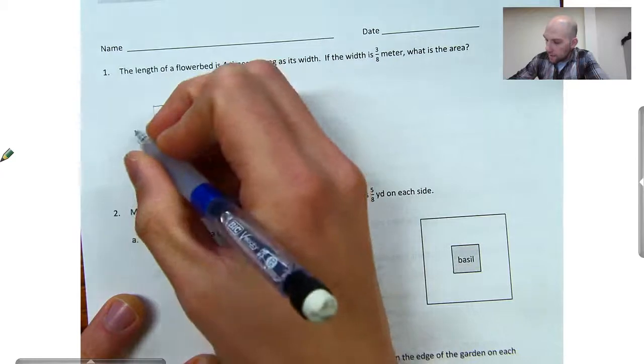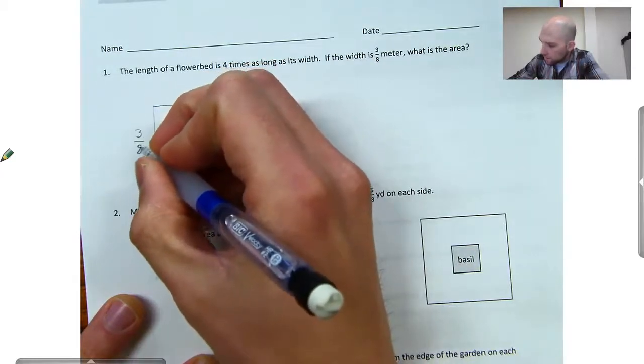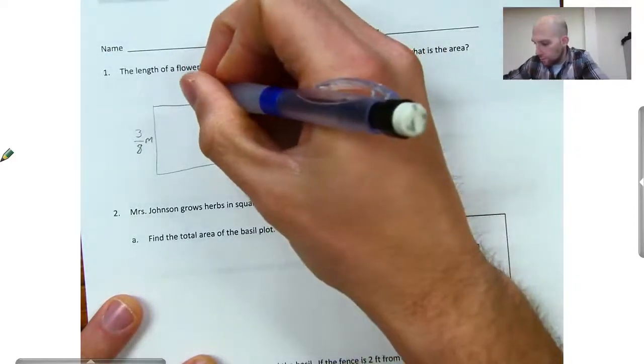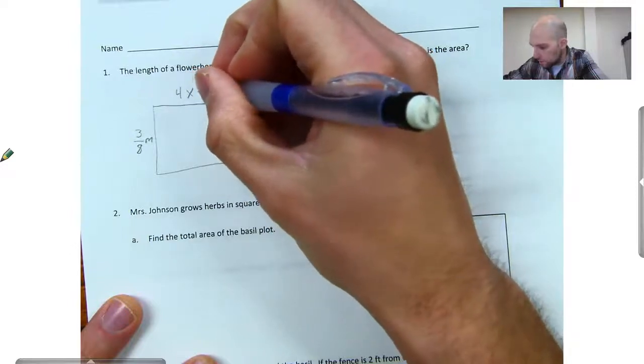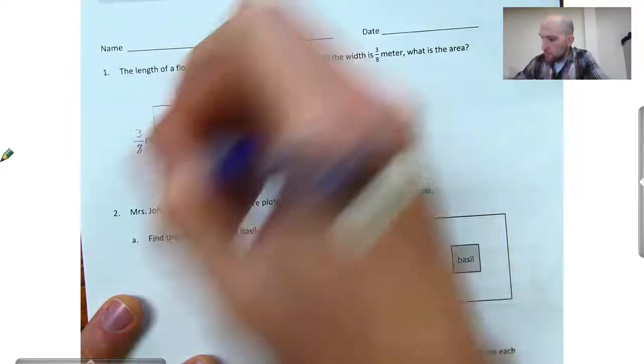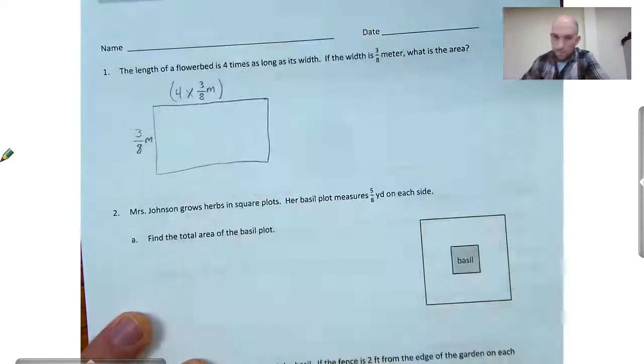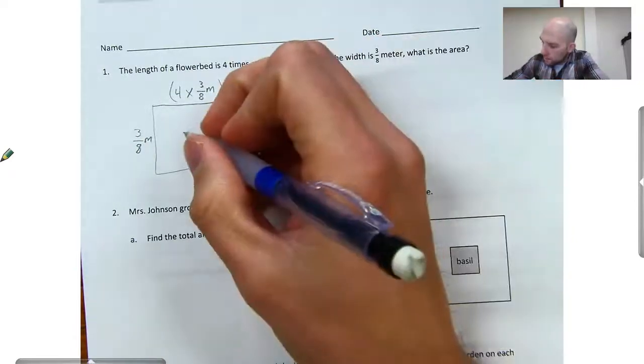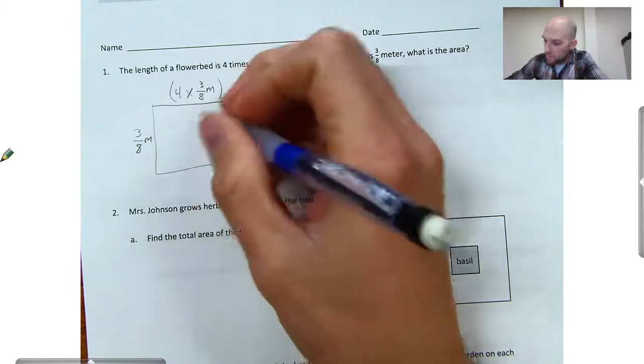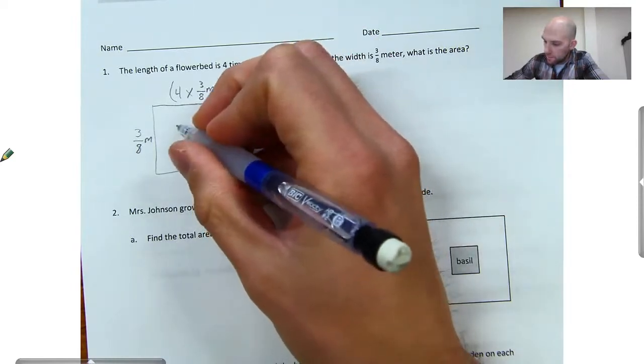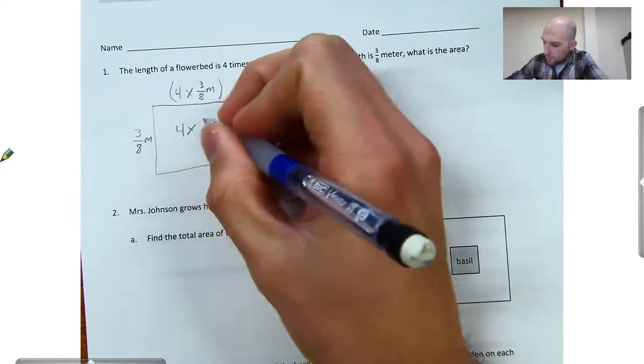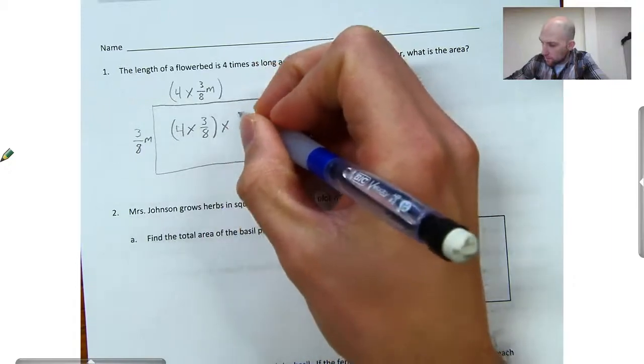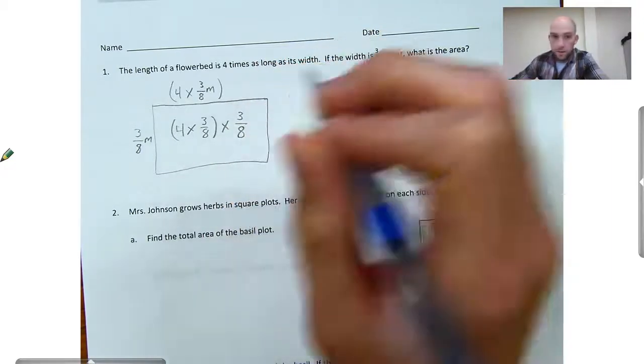And I know the width is three-eighths of a meter. And its width is four times as long. So this is going to be four times three-eighths of a meter. And now if I want to find the area, I'm going to multiply both sides together. So I'm going to have four times three-eighths times another three-eighths. And that's going to give me my area.